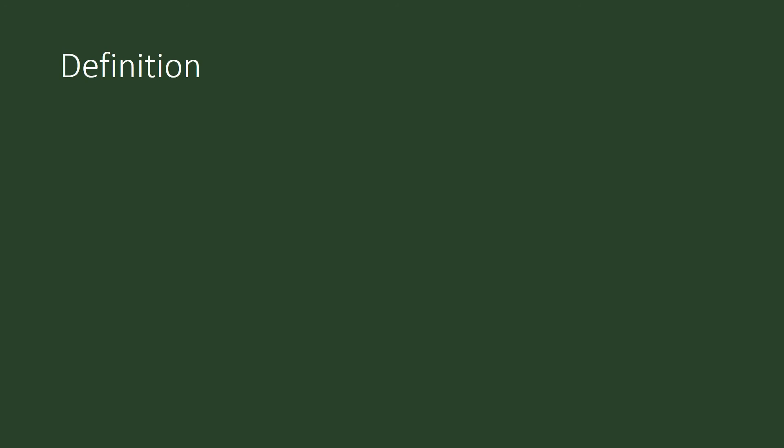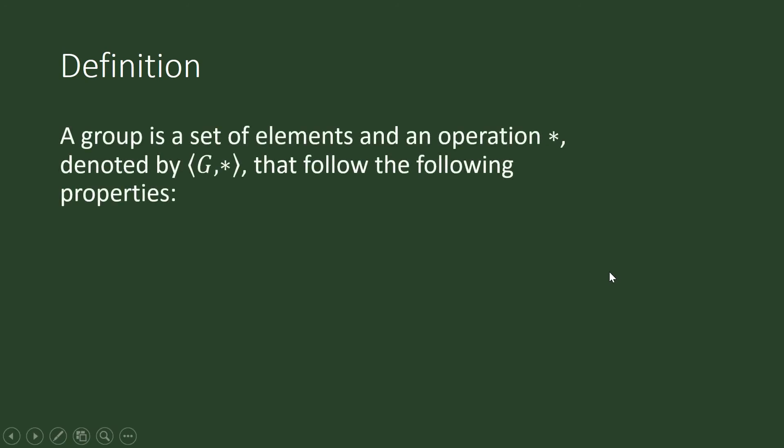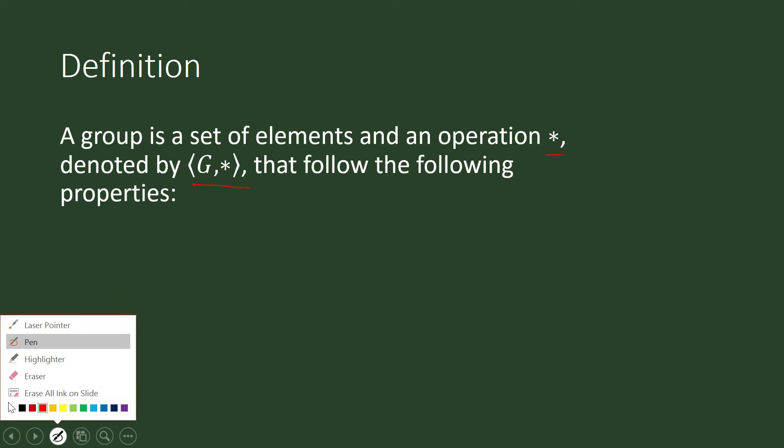So, what is a group? The word group is there in your English dictionary, but it's not just a set of elements. A group in mathematics is a set of elements and an operation star. And together, the set and the operation is denoted by (G,*). That follows the following properties.